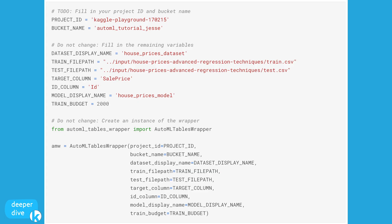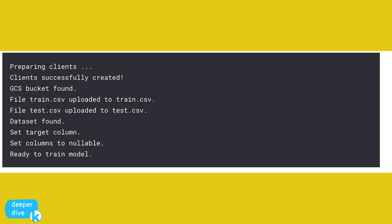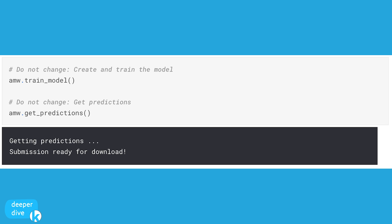The only two variables you need to update are your project ID and bucket name, and the learn team has provided instructions on how to do that in the exercise. We've got this giant code chunk that gives AutoML all the instructions it needs to build the model. Once we've run this block of code, we'll see that our notebook is ready to train the model, so we commit the notebook and run the next code chunk — AutoML wrapper dot train underscore model and amw dot get underscore predictions — and before you know it, we'll have our second competition submission ready to go.